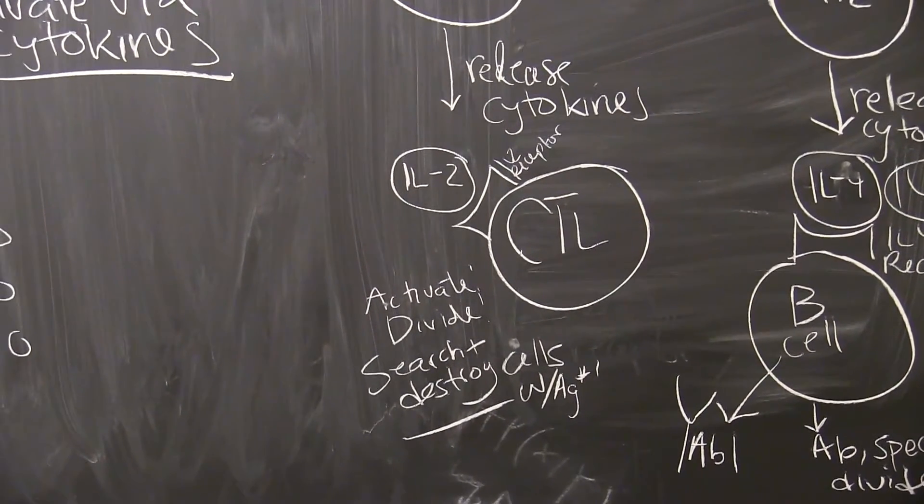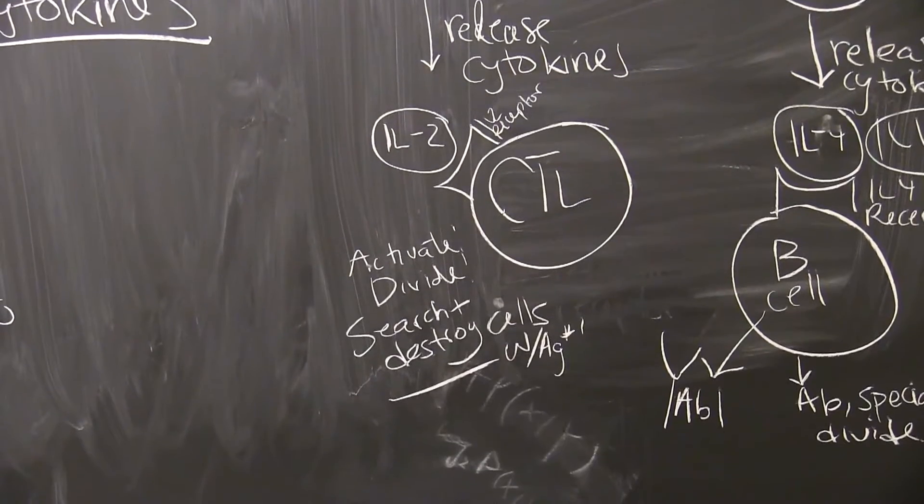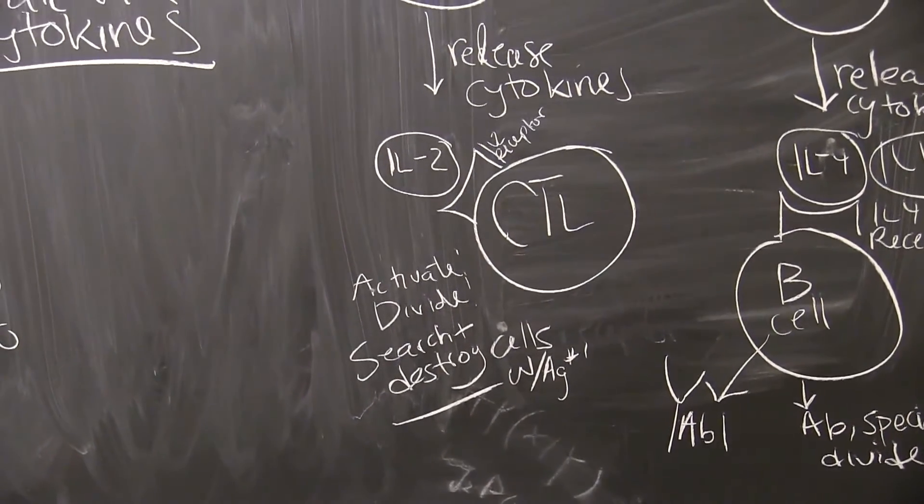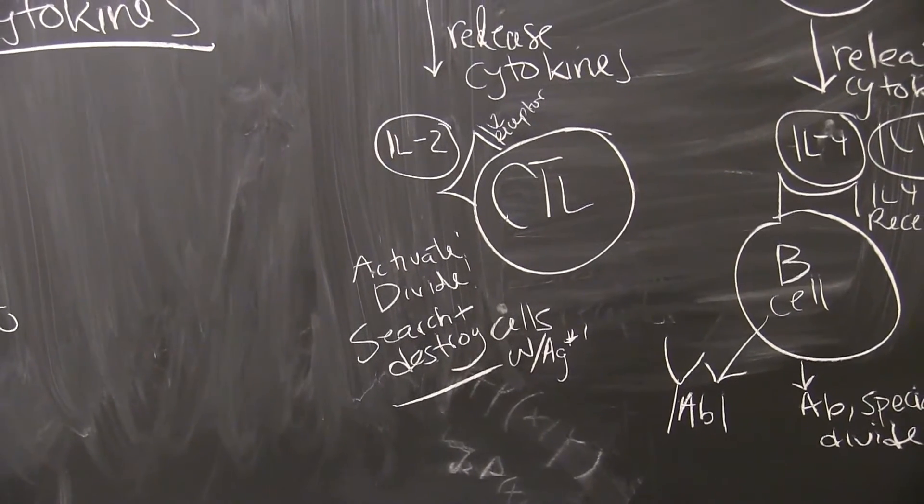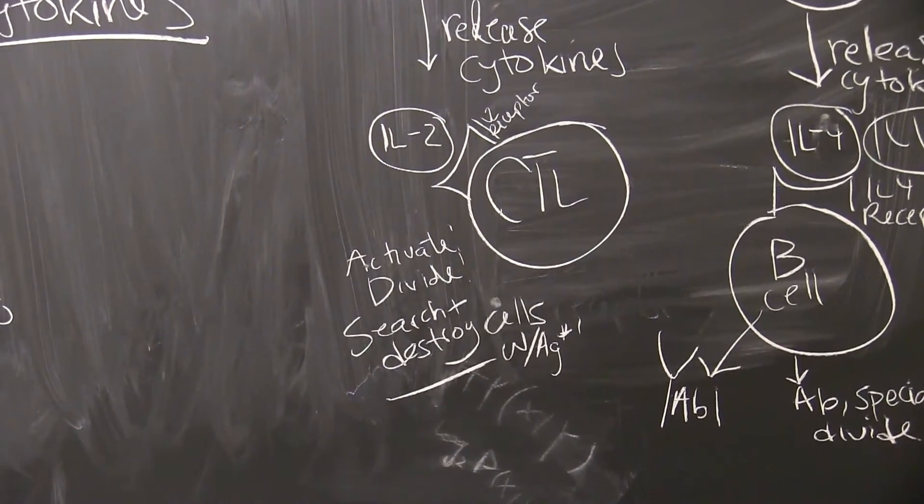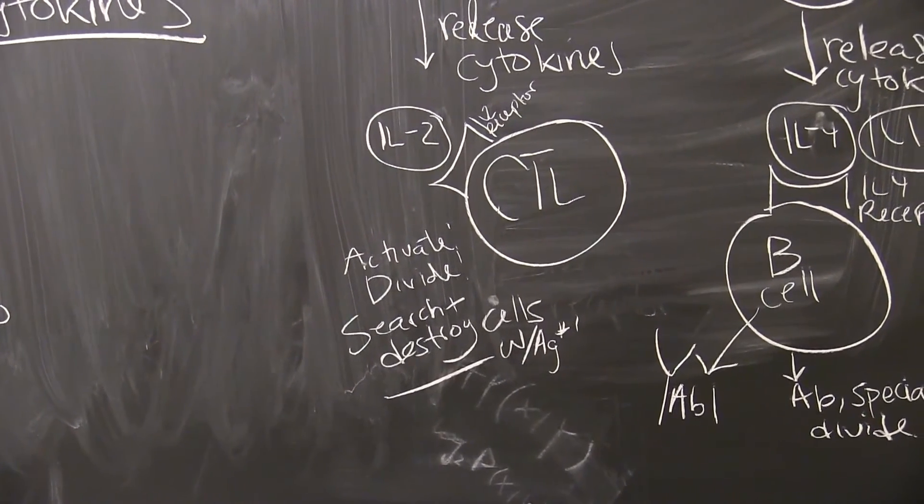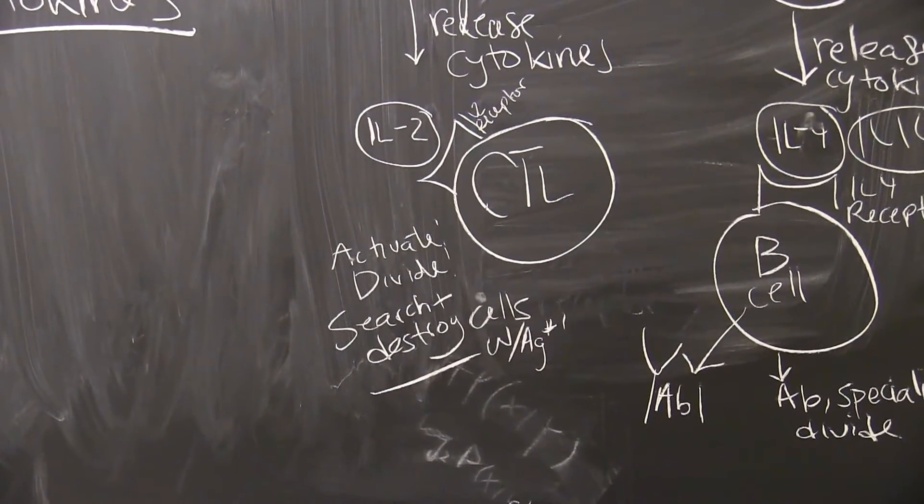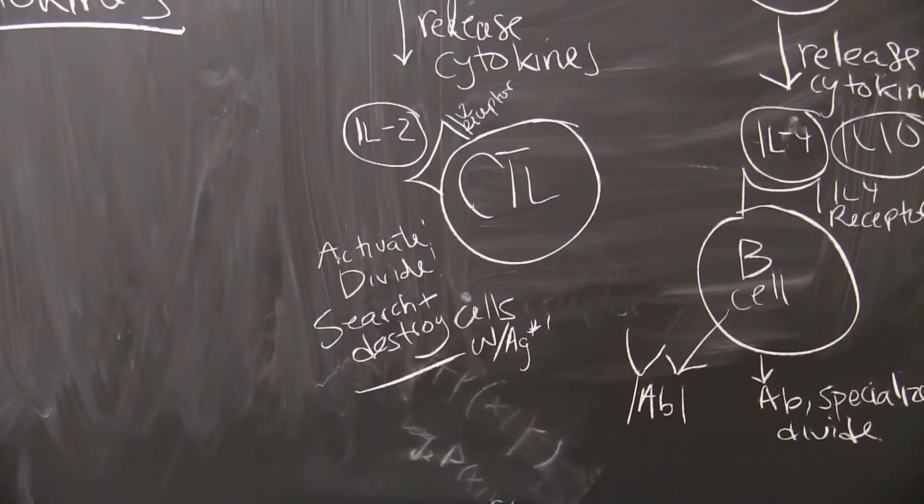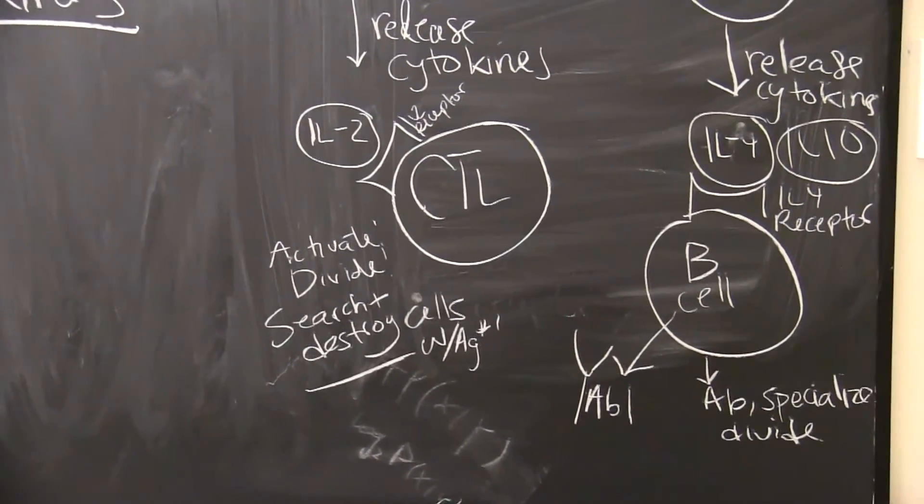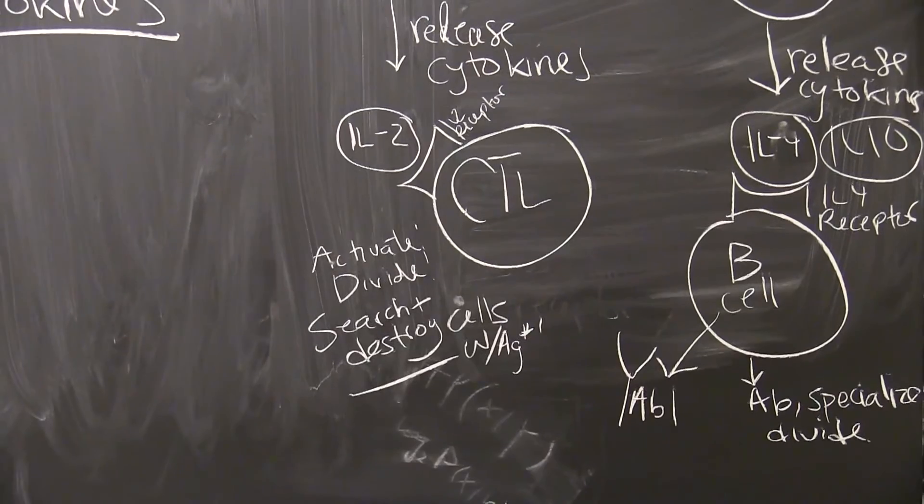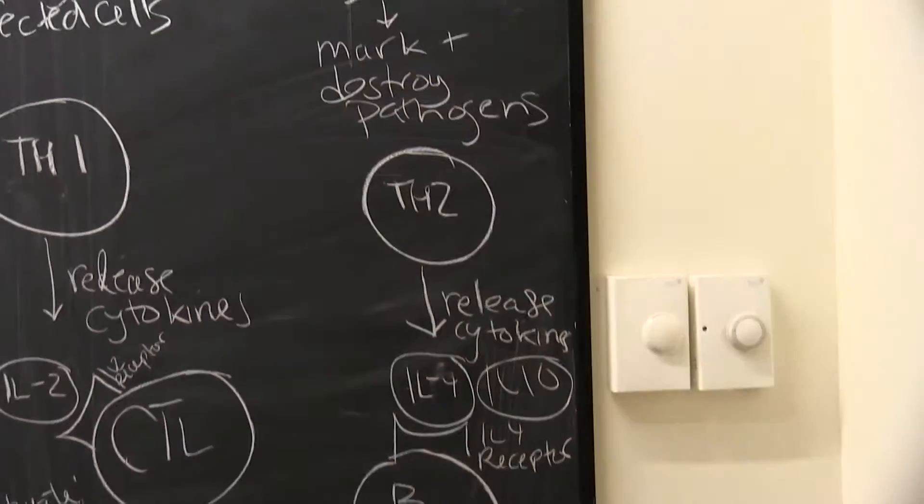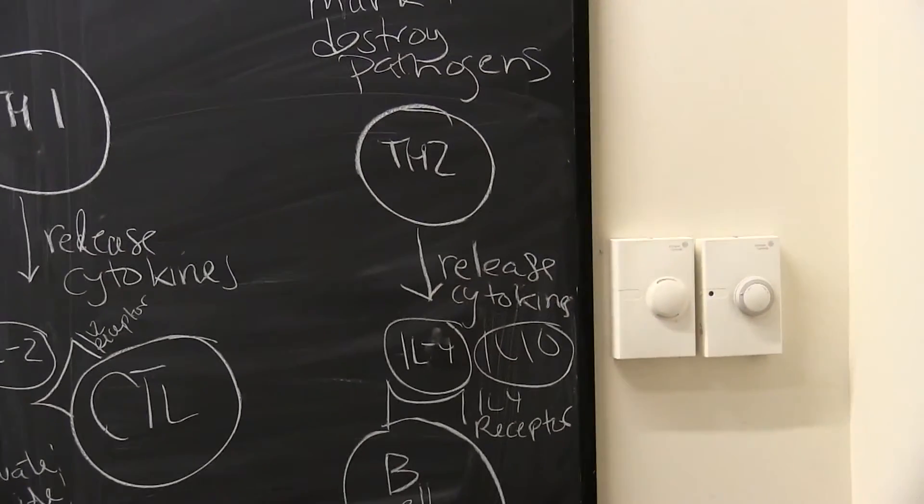In the next episode, we'll show you exactly what happens when the CTL is activated and it goes to find its infected cell. Remember, this CTL is specific for antigen number one, the first antigen that was on the PAMP that activated the macrophage in the first place. Okay, so TH2, getting back to the antibody response.